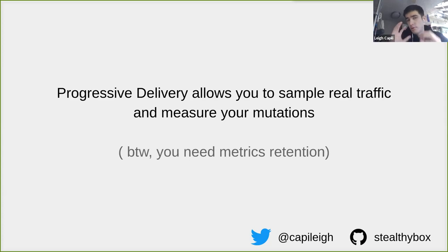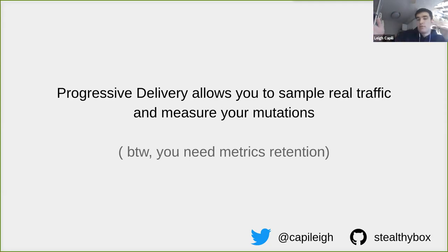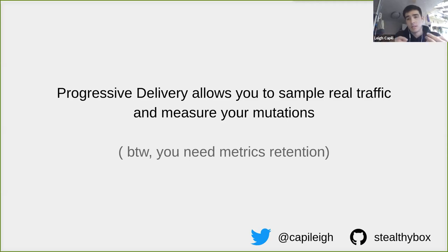Progressive delivery composes with SRE: it's a mechanism that, when met with other prerequisite platform capabilities, allows you to sample your traffic and measure your mutations. Since metrics are such an important part, you should have metrics retention — at least enough for the period of your delivery and the review period. If an incident occurs and you released five changes, you need to know which one in the past three days had an effect. With distributed systems, those effects can be nuanced, so solve that metrics retention problem.